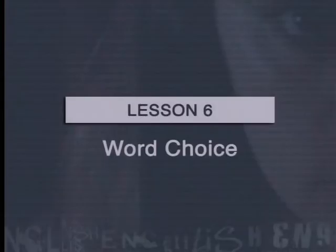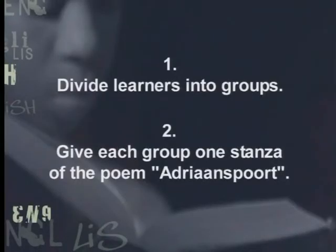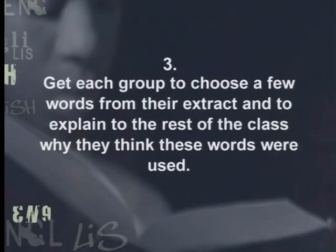In this lesson, we learn about word choice in poetry and how this contributes to the meaning of a poem. Prior to showing this lesson, you may want to complete the following activity: divide learners into groups and give each group one stanza of the poem Adrianspoort. Get each group to choose a few words from the extract and explain to the rest of the class why they think these words were used. When you show the lesson, learners can compare their explanations to those given in the lesson — though you should remind learners that there is never only one interpretation of a poem.